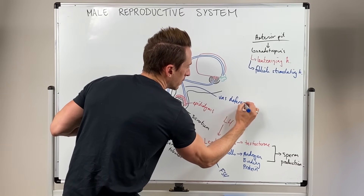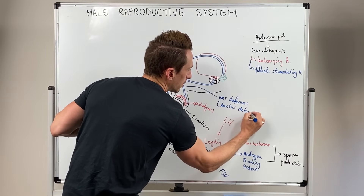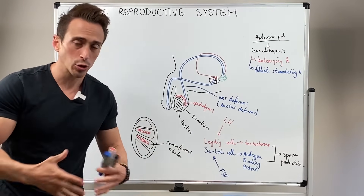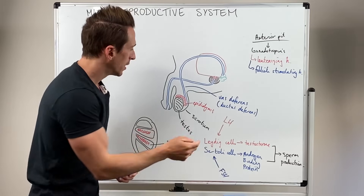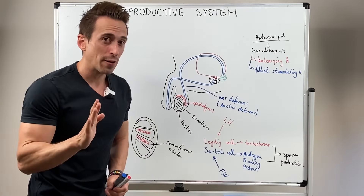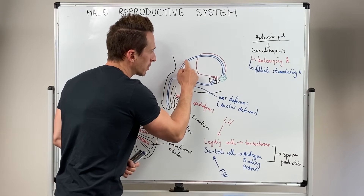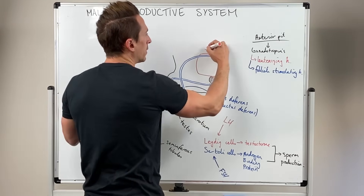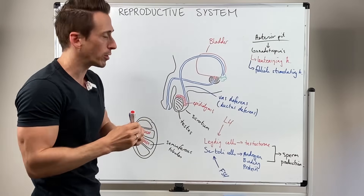If you've ever heard of a vasectomy — if a male no longer wants to produce children, they can have a vasectomy. 'Ectomy' is a suffix meaning to cut, so they cut the vas deferens. An intact vas deferens or ductus deferens transports sperm, and as you can see it loops around the bladder, which is part of the urinary system, not the reproductive system.